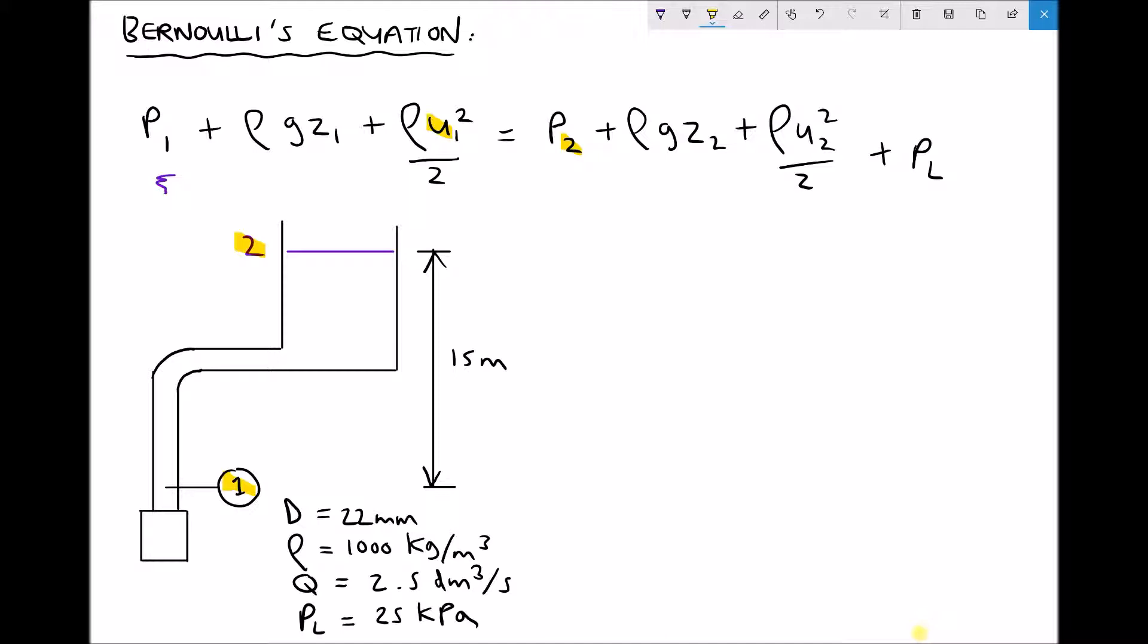We then have density times velocity squared over 2 for position 2 and finally we have any pressure losses PL. So what we actually have here is an energy balance because the total energy at position 1 must equal the total energy at position 2 taking any pressure losses into consideration. So let's take a look at our example and see which of these terms we actually need to use.